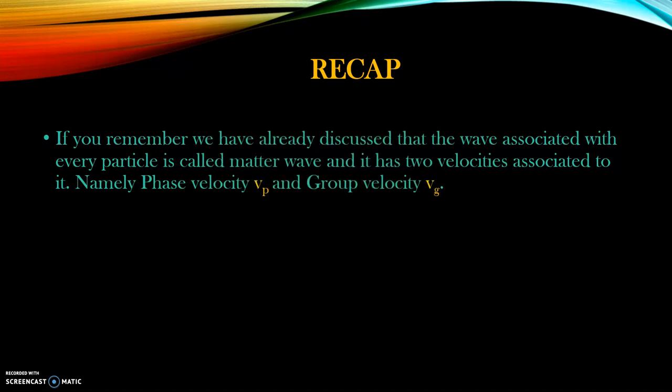Let's take a brief recap. We have already discussed that the wave associated with every particle is called a matter wave, and it has two velocities associated to it, namely phase velocity vp and group velocity vg. This matter wave is always associated to a particle which is in motion, moving with a velocity which is finite or much less than the velocity of light.